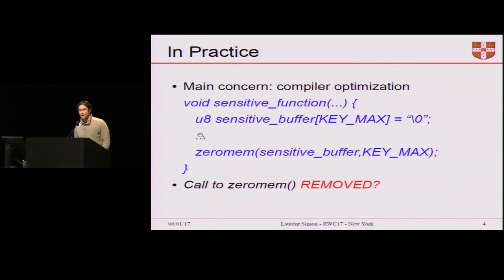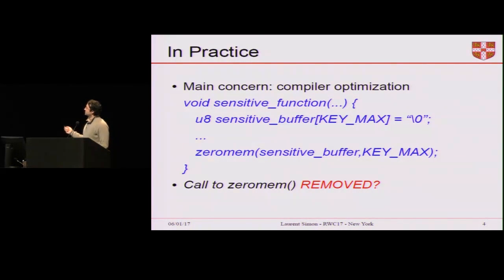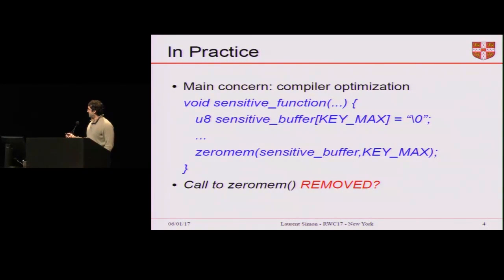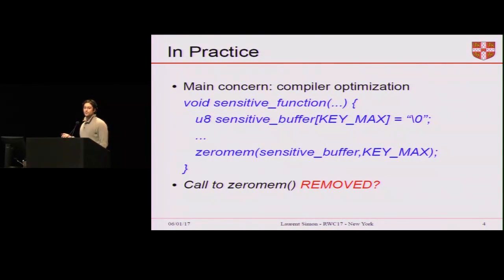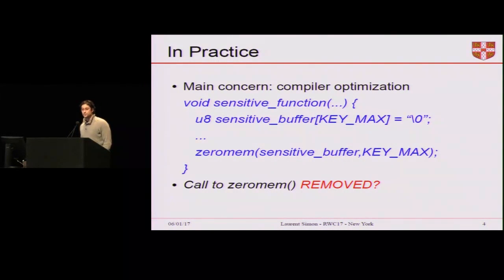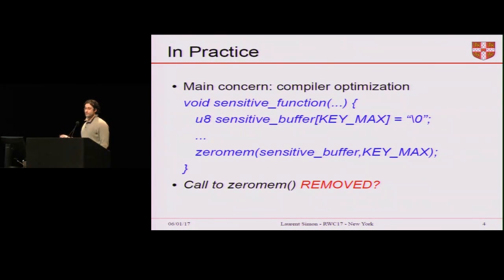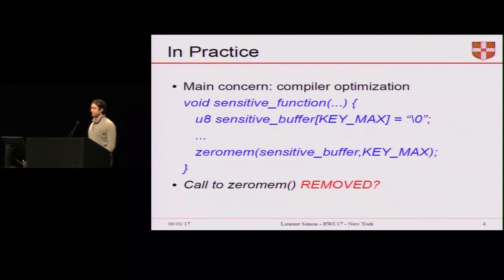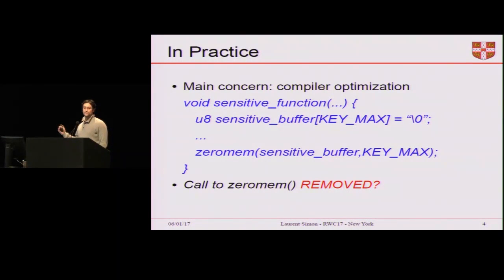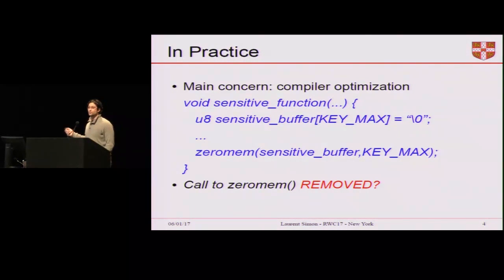The main concern people have when it comes to securely deleting data from RAM is compiler optimization. There's a simple example on this slide: a sensitive function declares a sensitive buffer on the stack, and before the function returns the programmer calls a zeromem function to zero that buffer. The concern is that the compiler might remove the call to zeromem because the sensitive buffer is going out of scope when the function returns — it's wasteful to erase a variable that's never going to be accessed again. Later I'll give more examples of problems that occur in practice which are actually not related to compiler optimization.